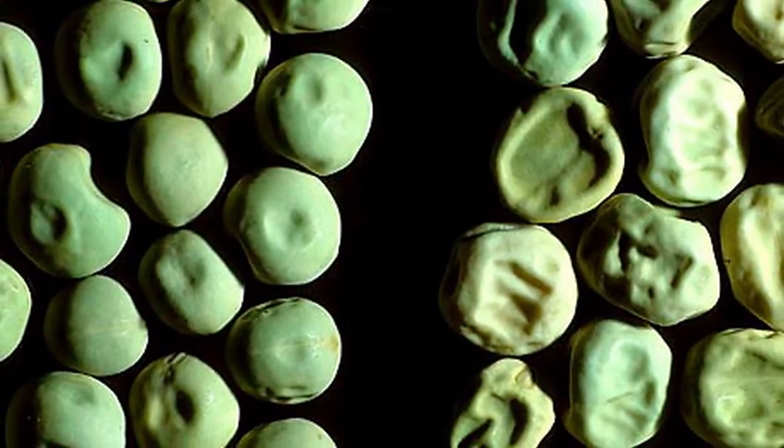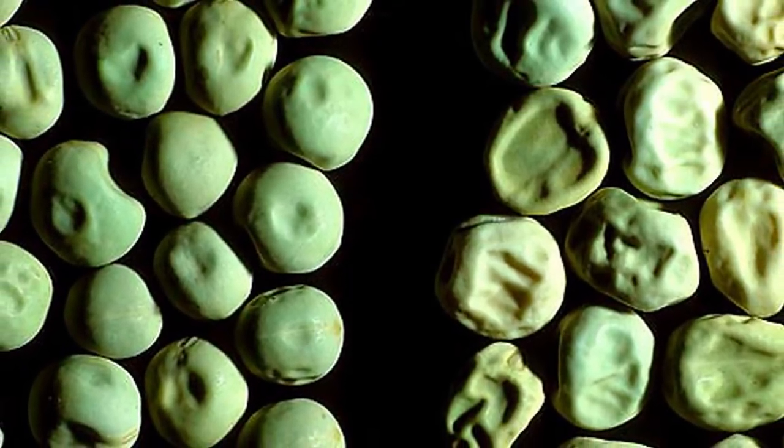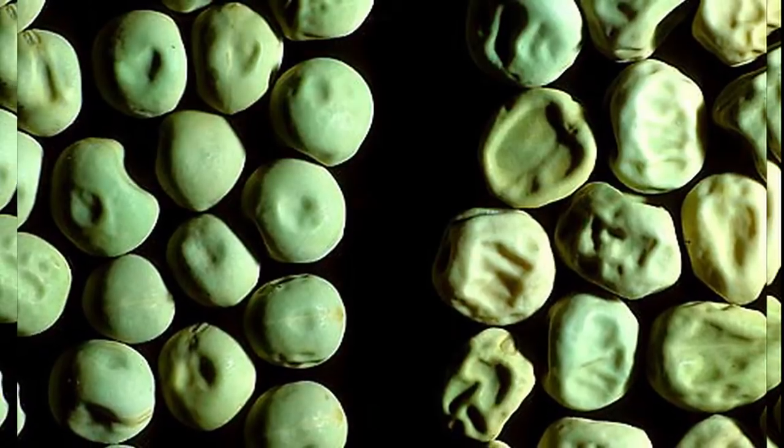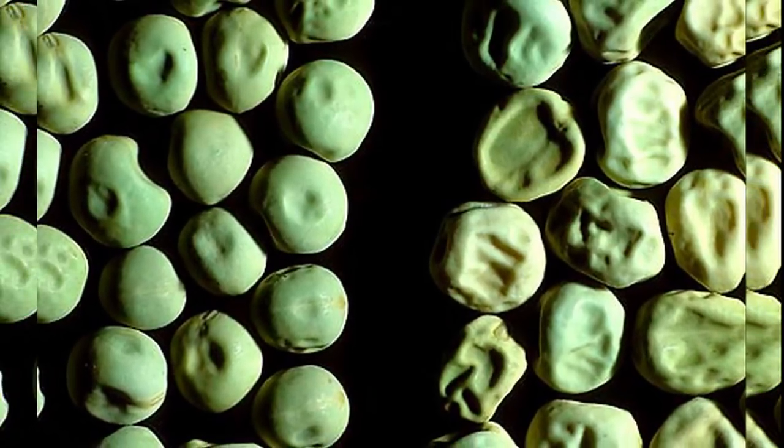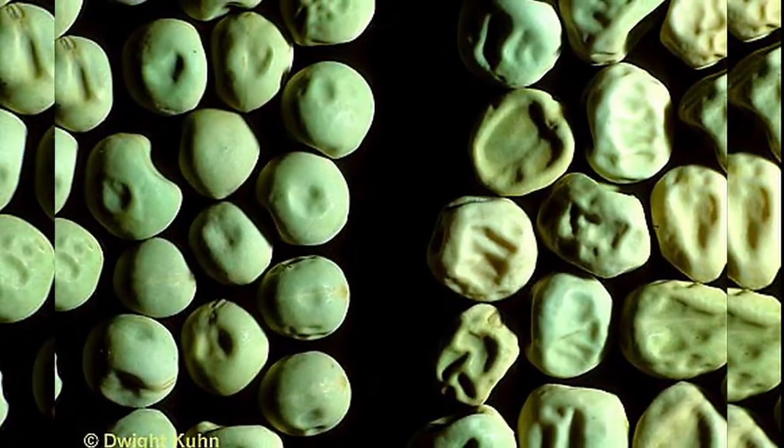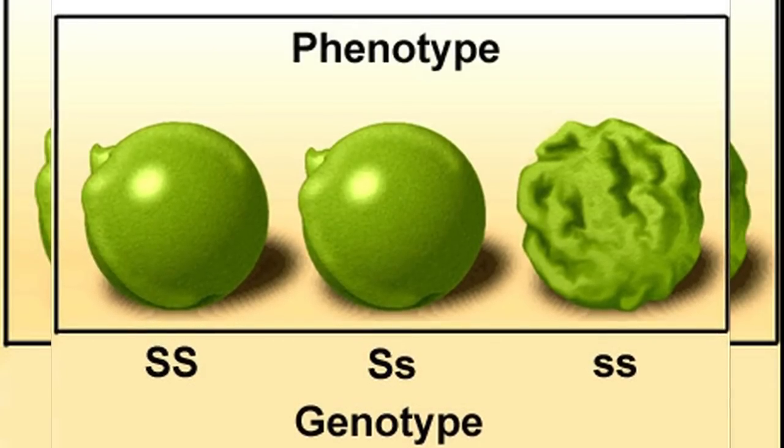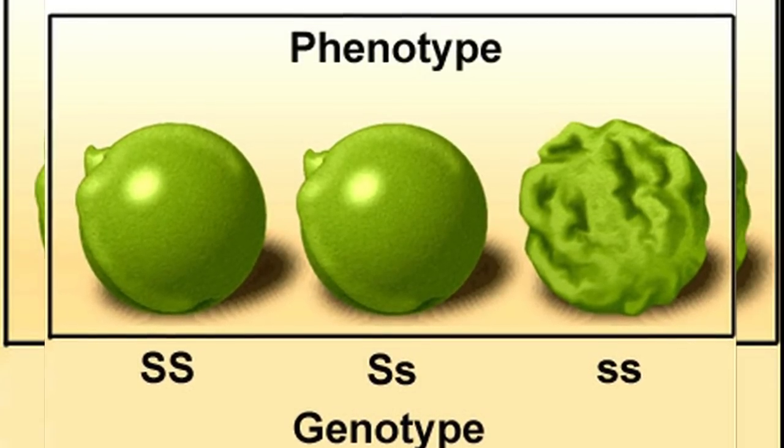Possibly the best known example of this is smooth versus wrinkled peas. The assumption of the day was that hybridizing the two should produce a median phenotype somewhere between the wrinkled and the smooth surfaces. What he discovered instead was that these traits do not blend. It is either one or the other.